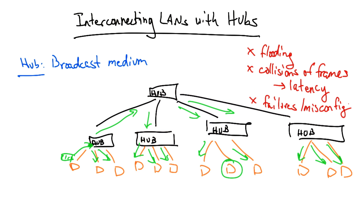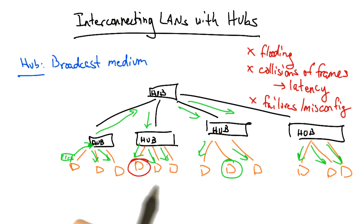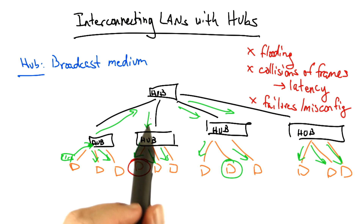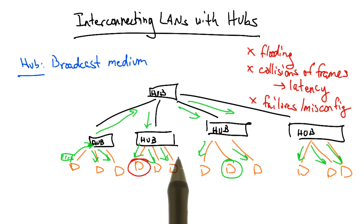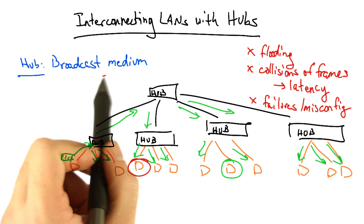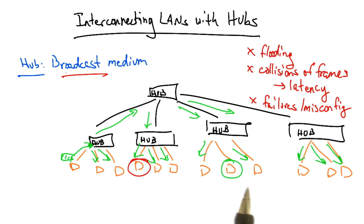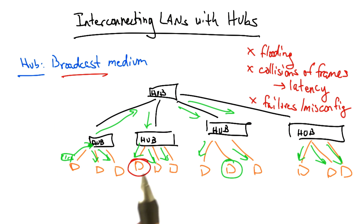LANs that are connected with hubs are also vulnerable to failures or misconfiguration, because even one misconfigured device can cause problems for every other device on the LAN. Suppose you had a misconfigured device that was sending a lot of rogue or unwanted traffic — on a network connected with hubs, every other host on the network would see that unwanted traffic. So we need a way to improve on this broadcast medium by imposing some amount of isolation.